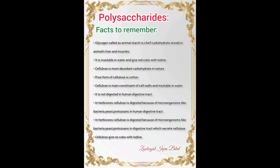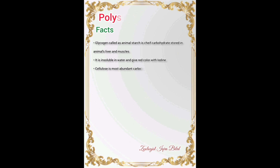Cellulose is the most abundant carbohydrate in nature; its pure form is cotton. Cellulose is the main constituent of cell walls and is insoluble in water. It is not digested in the human digestive tract, but in herbivores, cellulose is digested by microorganisms like bacteria, yeast, and protozoans that secrete cellulase. Cellulose gives no color with iodine — a very important MCQ.